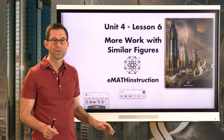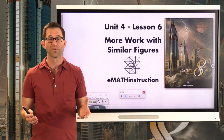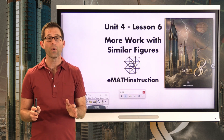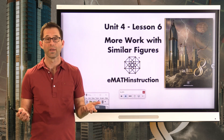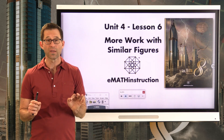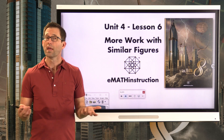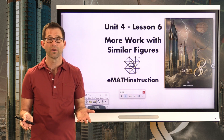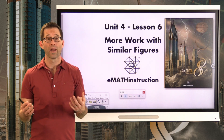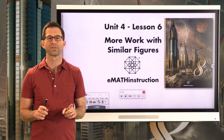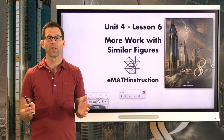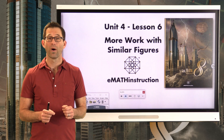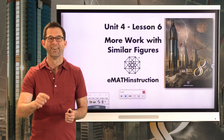Today we worked with more on similar figures. The key takeaway is that the ratio of relatively positioned sides are equal to one another, and using this we can solve for missing sides. We can also use the approach of ratios of corresponding sides being equal. Whichever one seems more natural, we can certainly use, but we want to understand both ideas. Thank you for joining me for another NGen Math 8 lesson by eMath Instruction. My name is Kirk Weiler — until next time, keep thinking and keep solving problems.